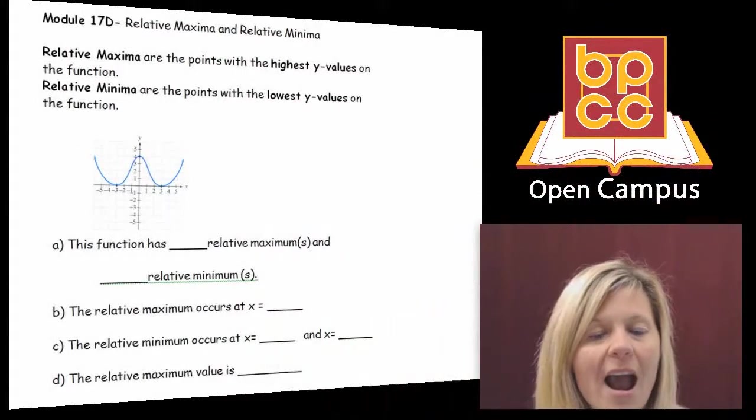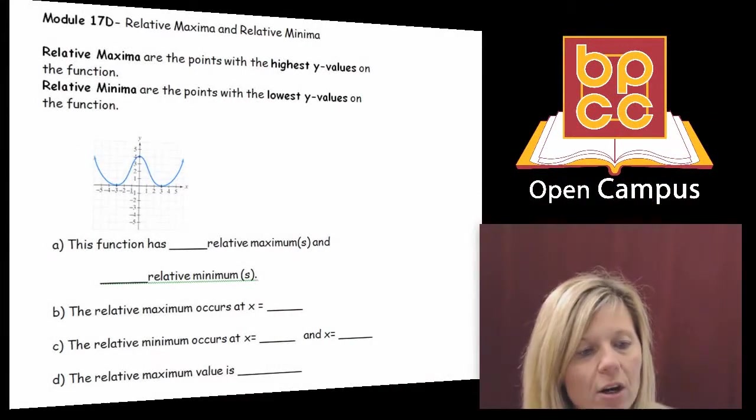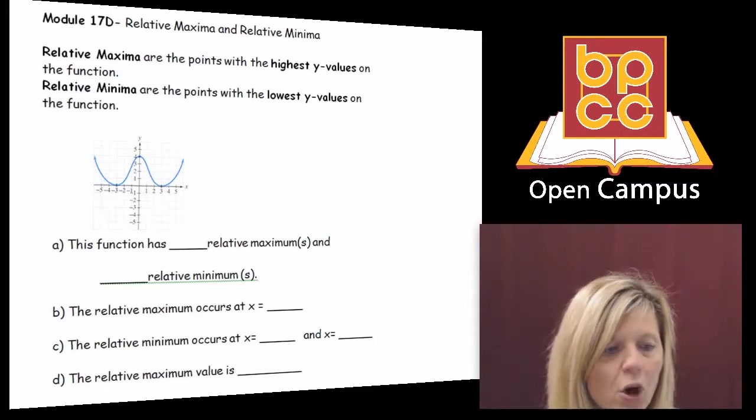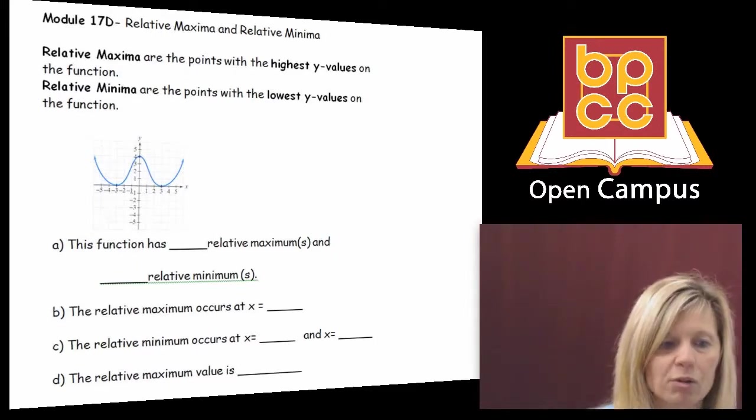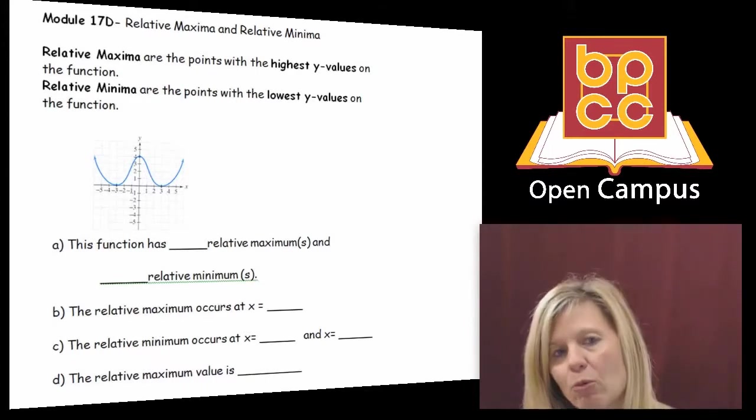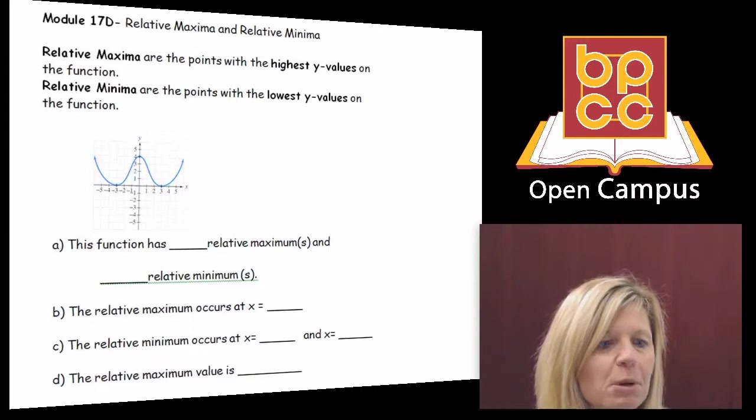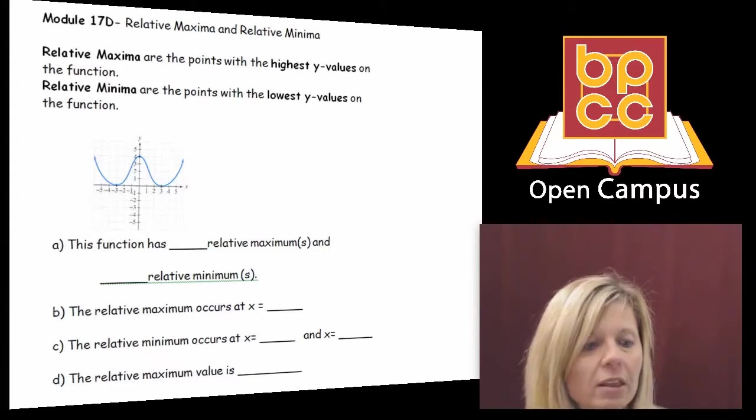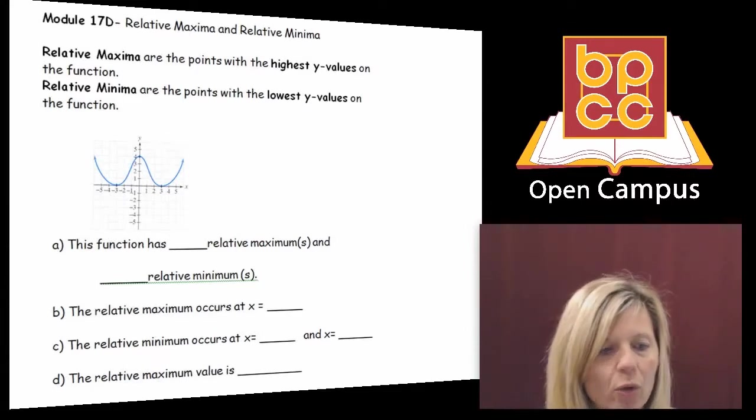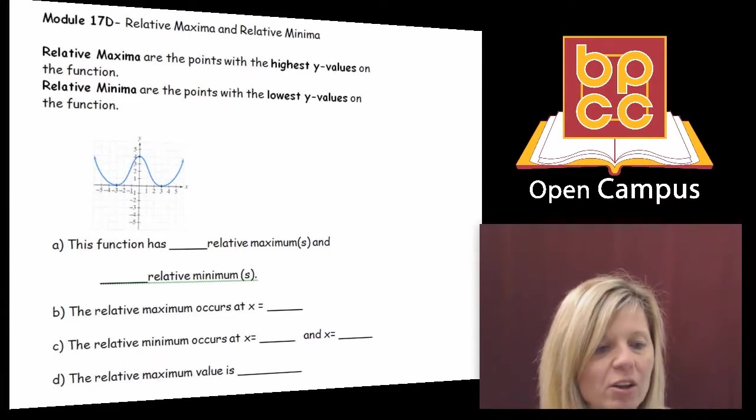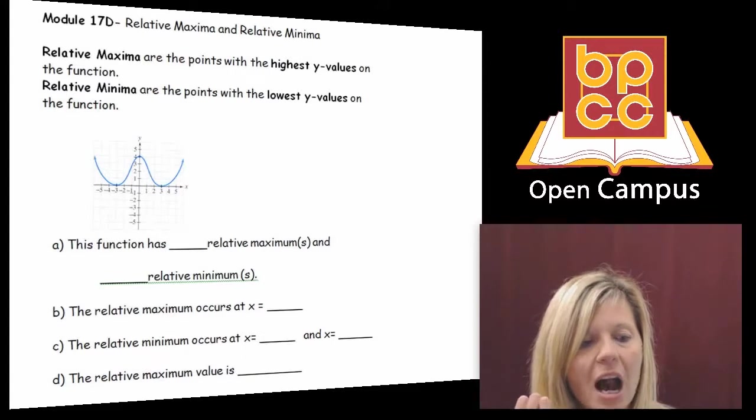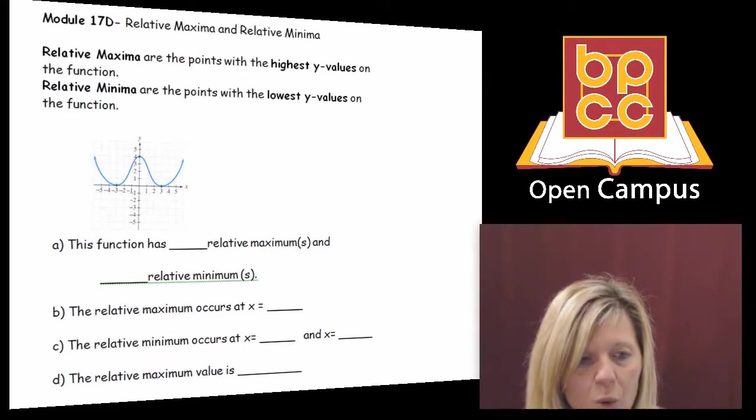If we look at our notes here I have a graph and it's some kind of crazy curve. Even though you guys have never learned to graph that curve we could still talk about these vocabulary words. The words are relative maximum and relative minimum. Maximum means what you think, the highest value, and minimum means the lowest value. We're looking at the highest y-value on the graph and the lowest y-value on the graph because the y-axis goes high to low.